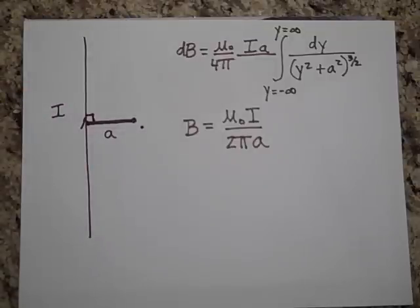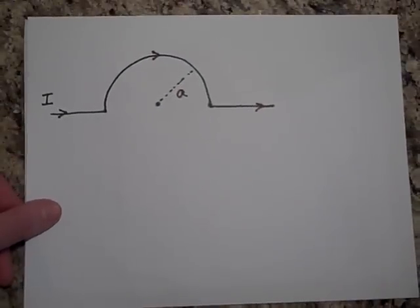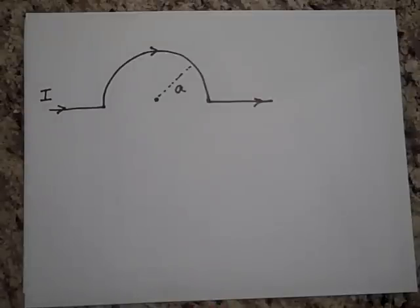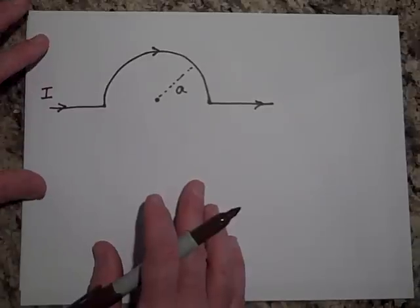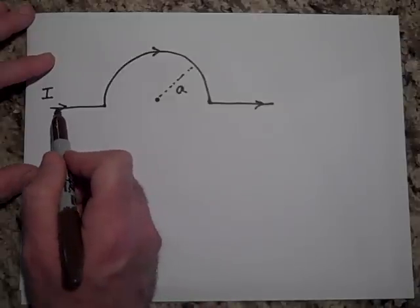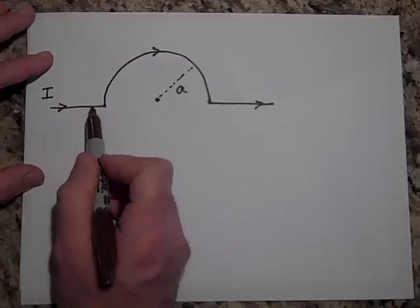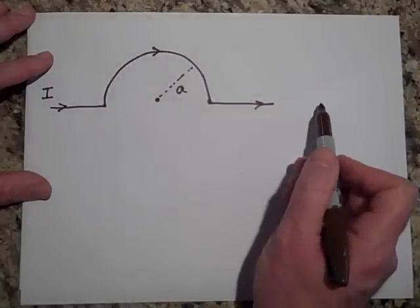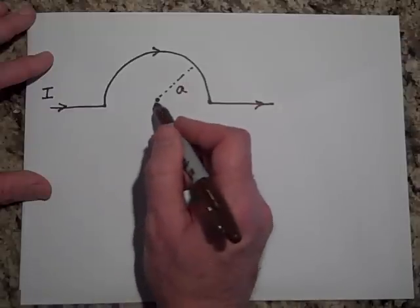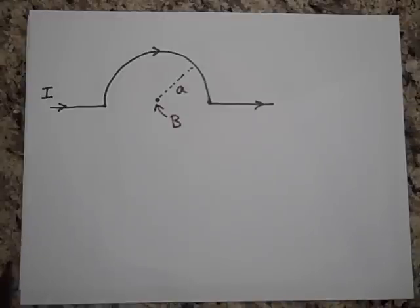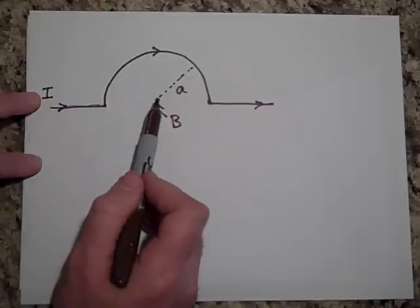Next I want to show how this gets used in a different situation. Sometimes Biot-Savart problems are much simpler — this is a very typical problem in AP Physics or introductory physics. You have a wire moving along, then it goes into a semi-circular loop and continues on its way, and they want to know the field right at that center point.